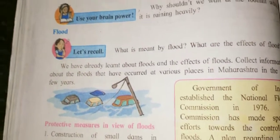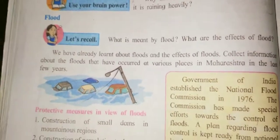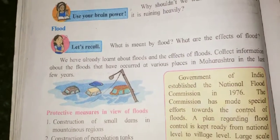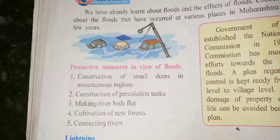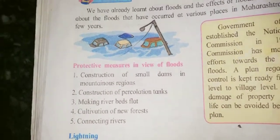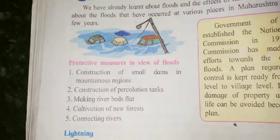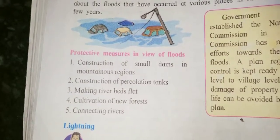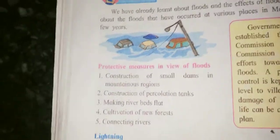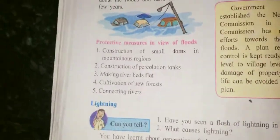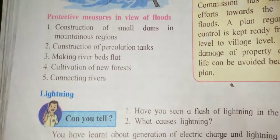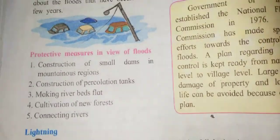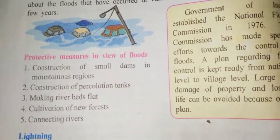Protective measures in view of floods: first is construction of small dams in mountain regions; second is construction of percolation tanks; third is making river beds flat; fourth is cultivation of new forests; fifth is connecting rivers. These are the protective measures in view of floods.